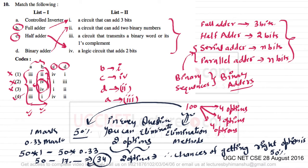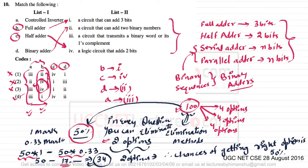For the 50 wrong answers, you subtract 50 multiplied by 0.33, which is approximately 16–17 marks. So even if you mark options using the elimination method, you are going to score somewhere around 33–34 marks. In every question, if you can eliminate two wrong options out of four, you can still confidently mark an answer.